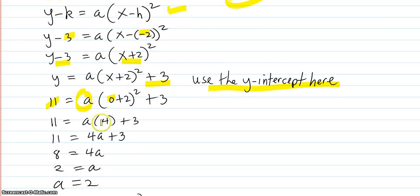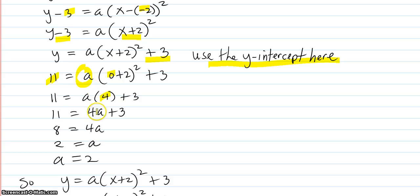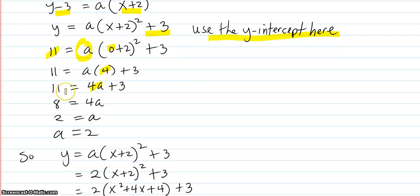So 2 squared is 4. And then switch it around to be 4a. Subtract 3 from both sides. It knocks it off of this side, subtracts it over there to be 8. 4 times a equals 8, a equals 2.